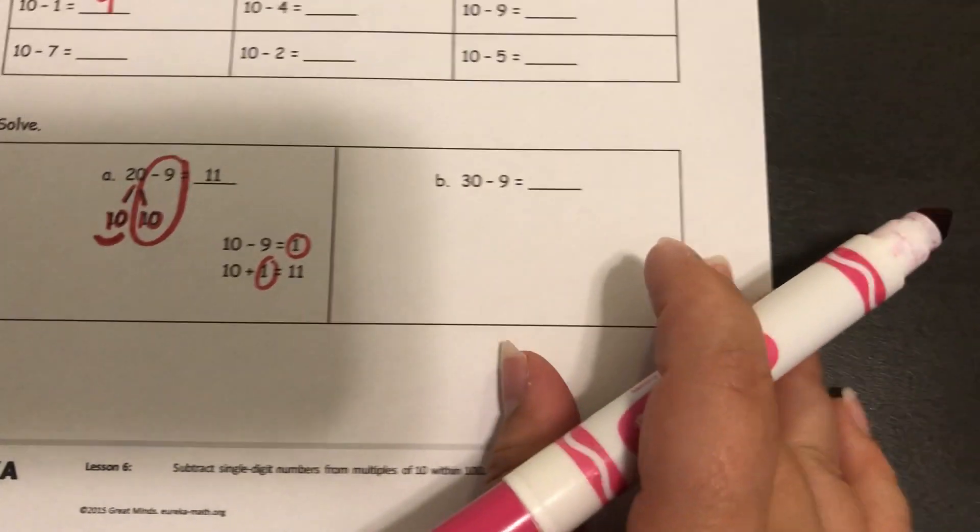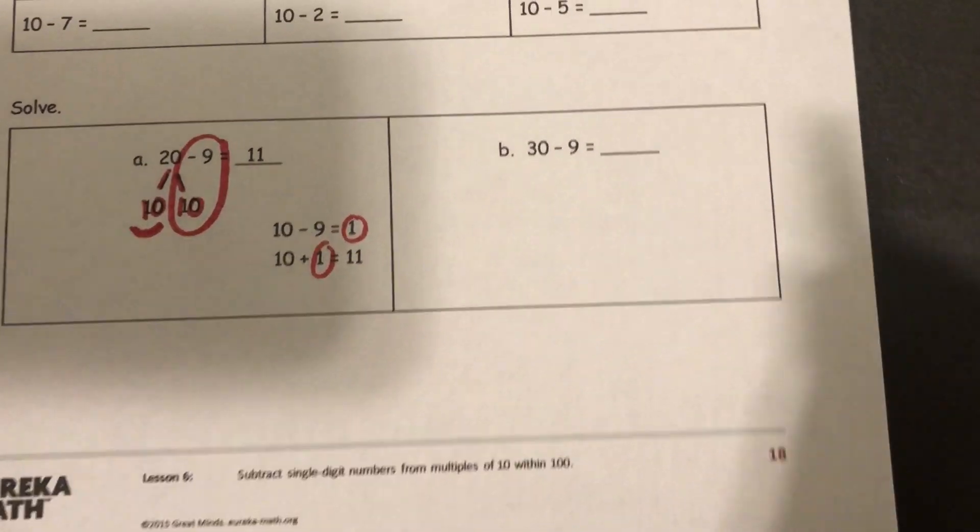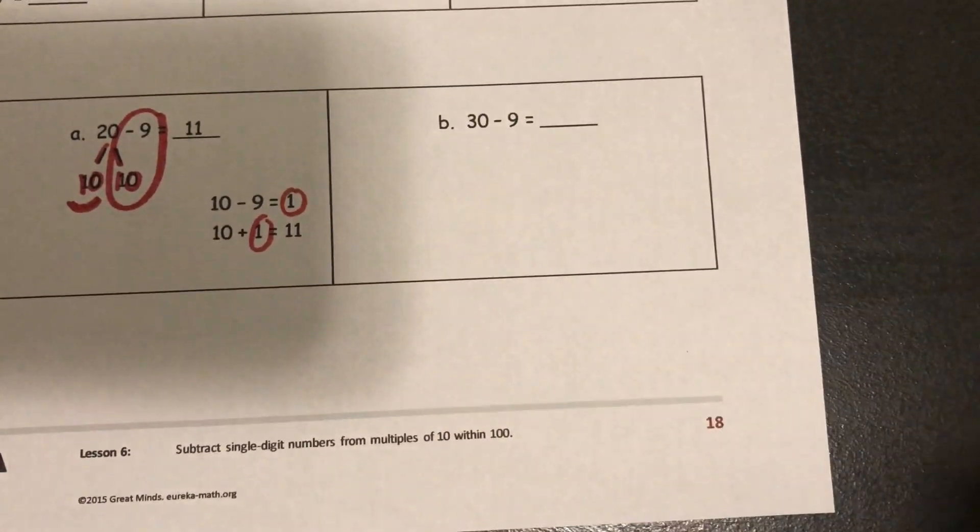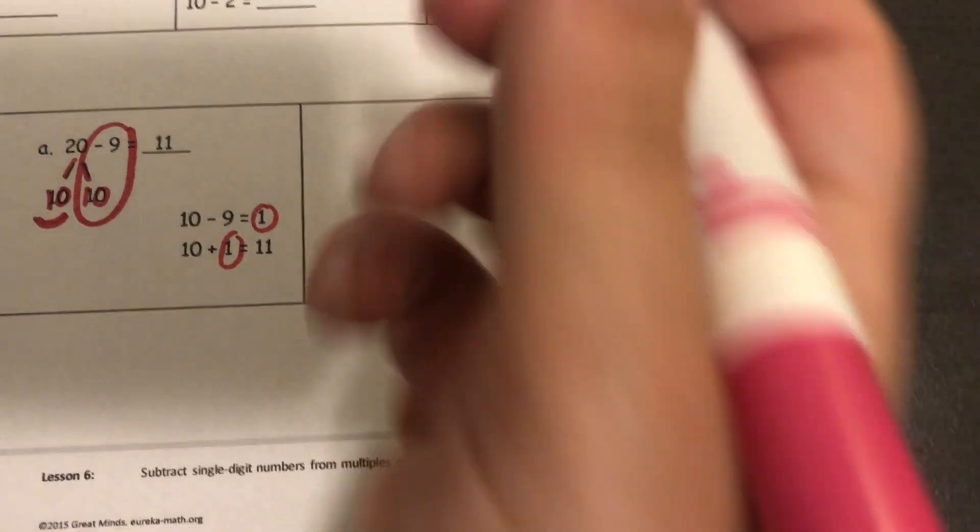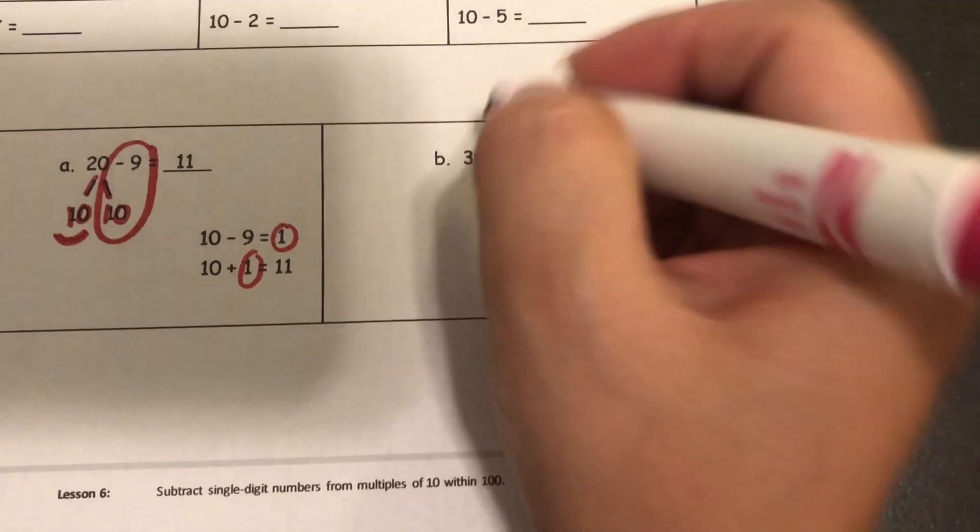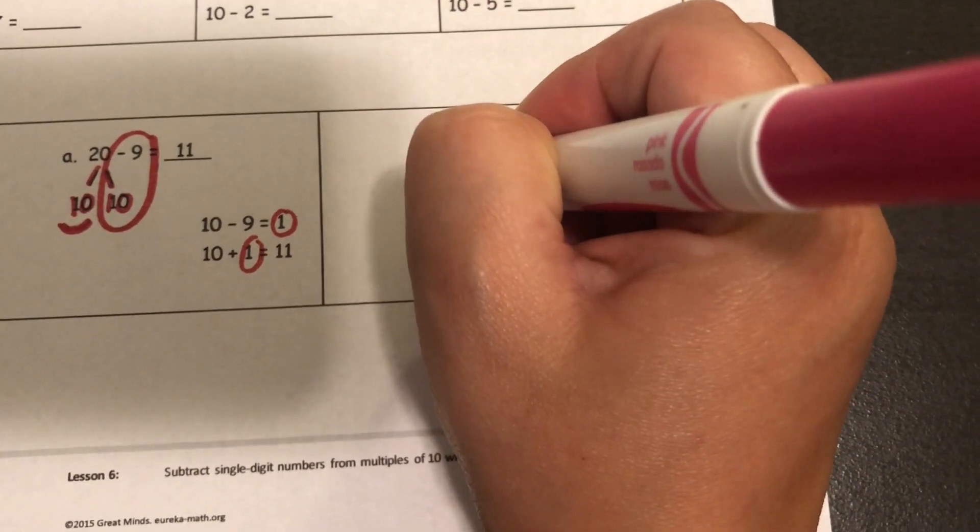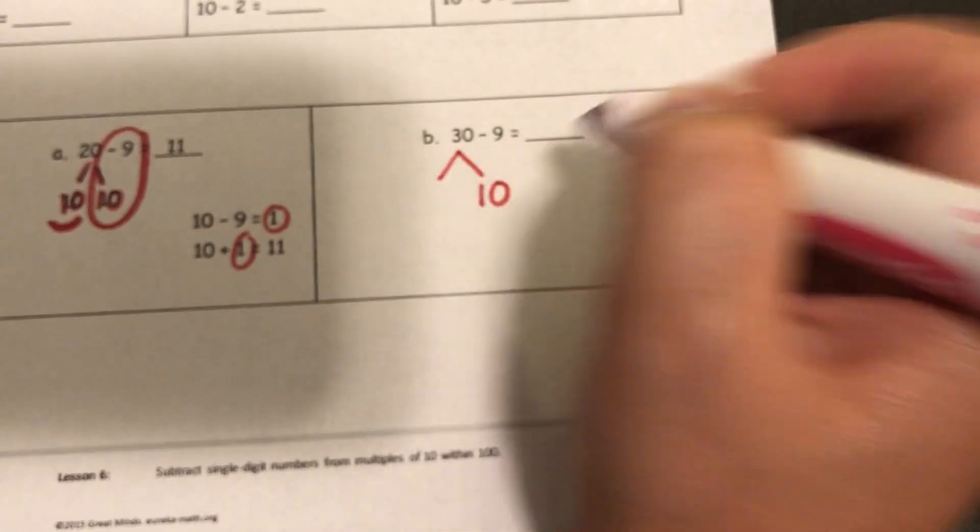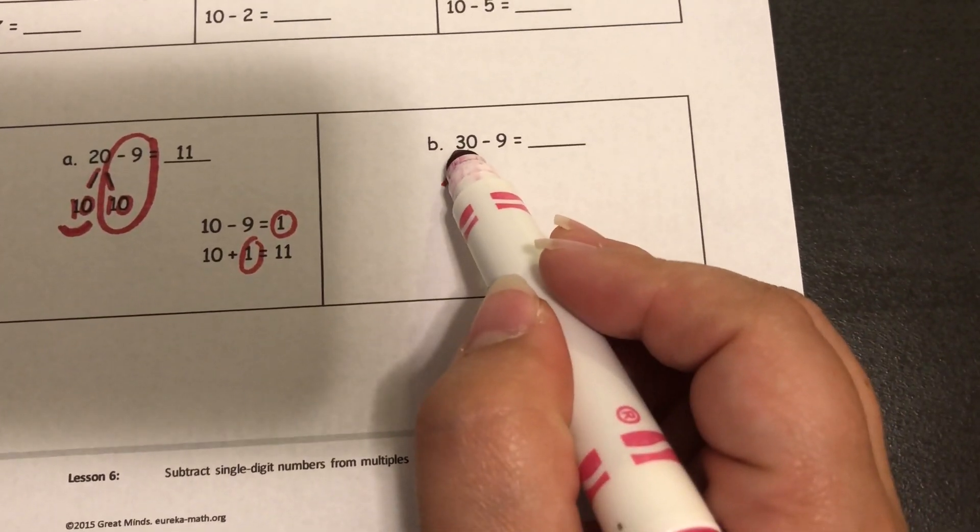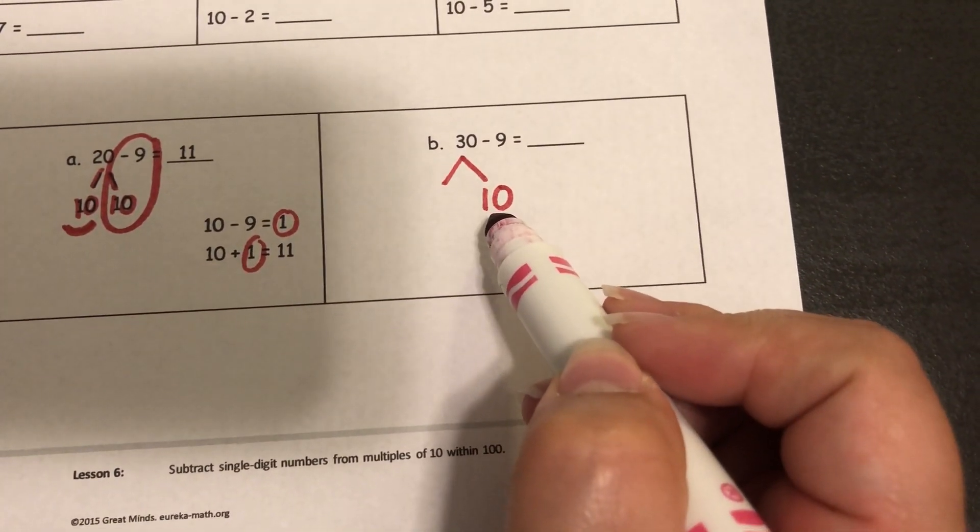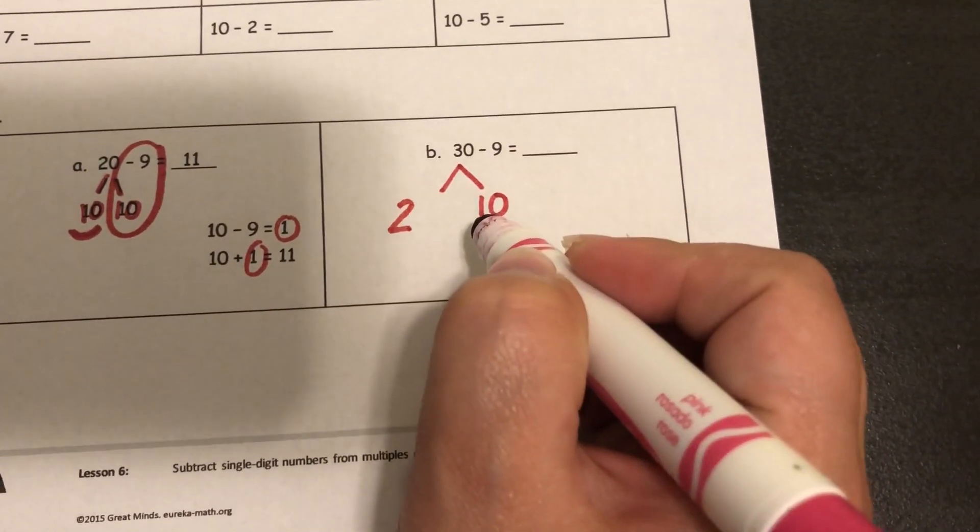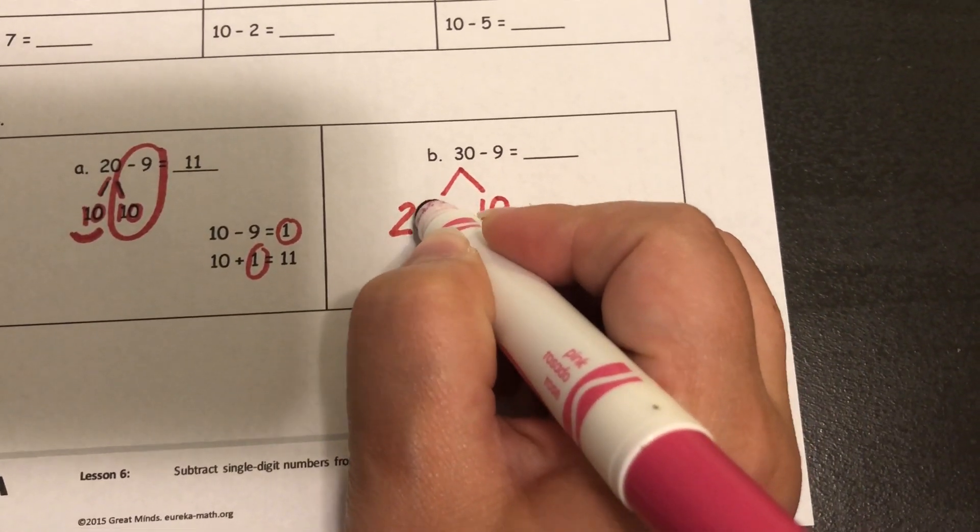All right let's look at another one together. So I'm starting with 30 minus 9. I'm using the strategy, take out a ten. So I decompose a 30. Take out my 10. I had three tens, I took one away which means there are two tens left which looks like 20.